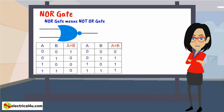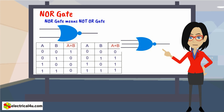Like OR gate, NOR gate may also have more than 2 inputs. This is a 3-input NOR gate and this is a 4-input NOR gate. Thanks for listening. We'll see you soon.